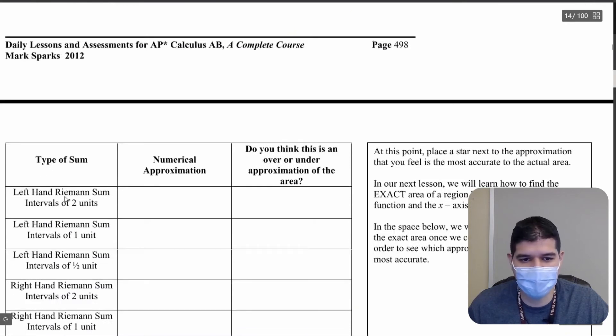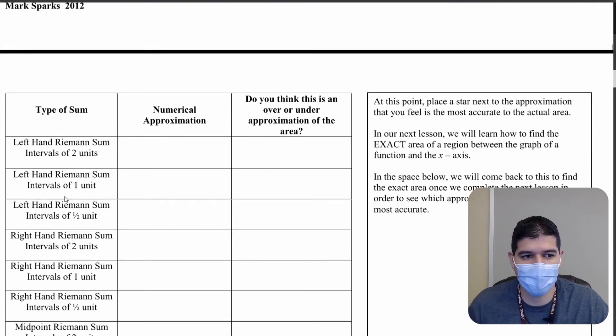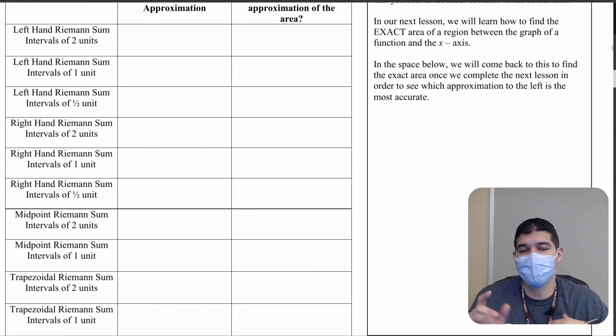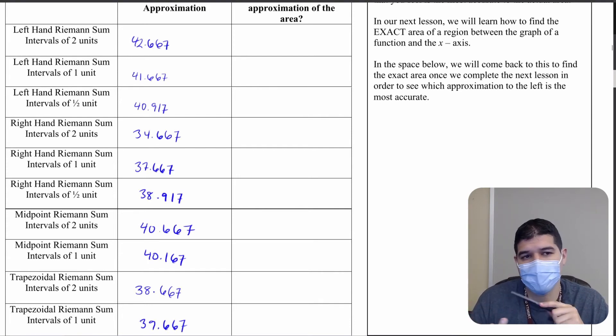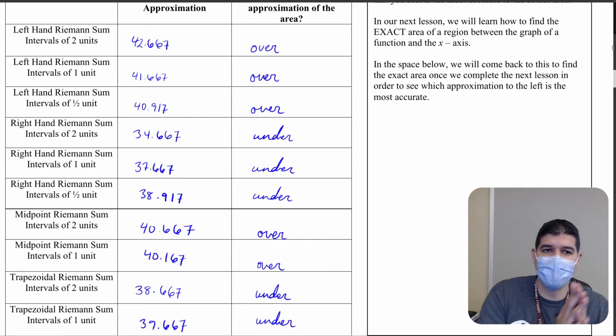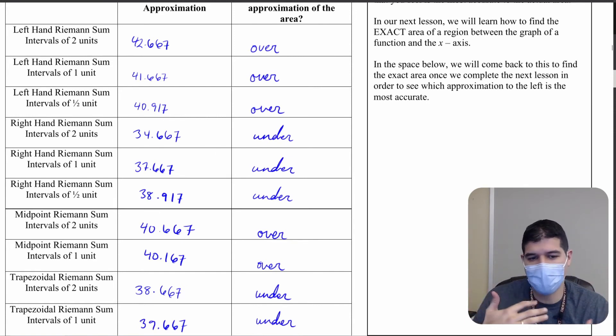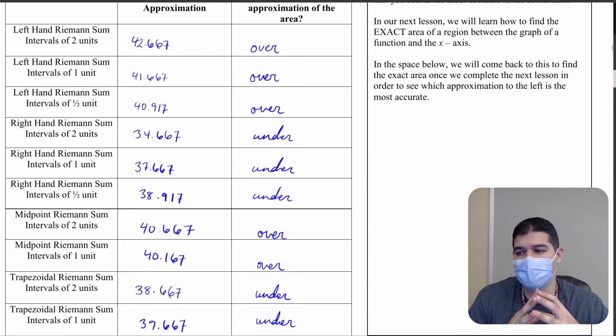And we're going to now start to move into a comparison between all of the values that we've had so far. So for now what I want you to do is go through all these approximations, write down the values that we've had, and then I want you to write down: do you think these are over approximations or under approximations of that area? So for now what I want you guys to finish with is just go ahead and put a star next to the approximation that you think is actually closest to the exact value.